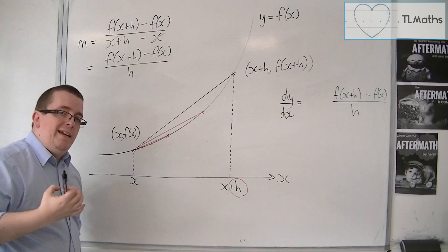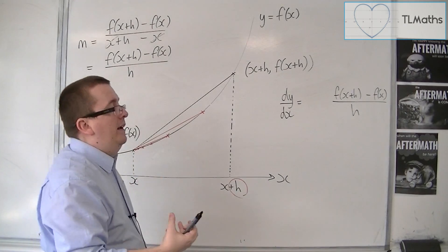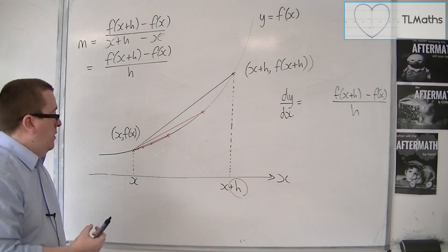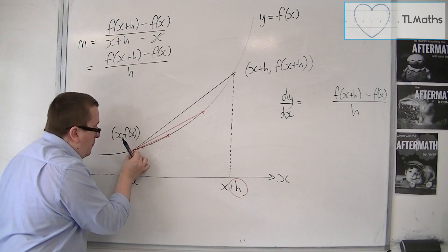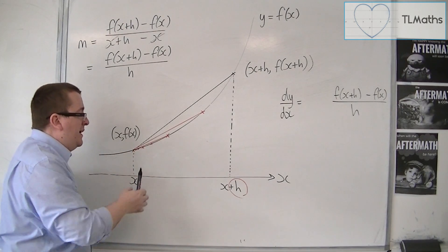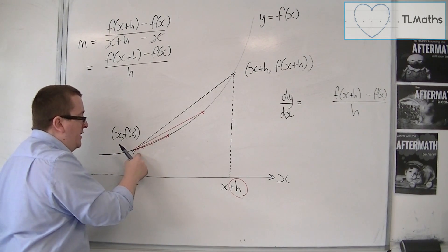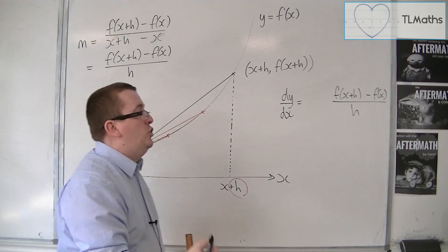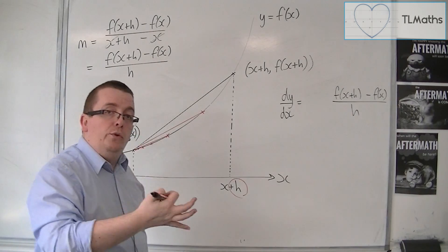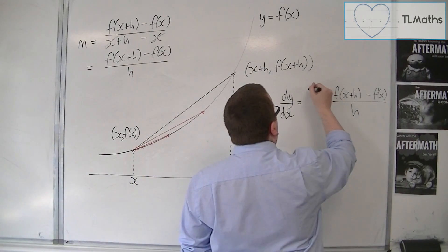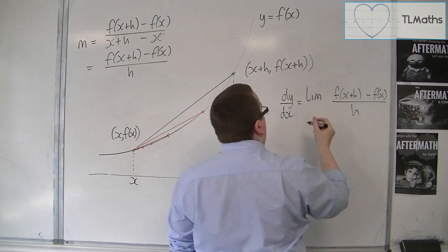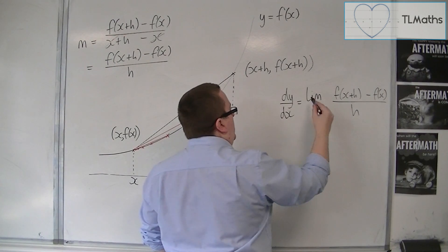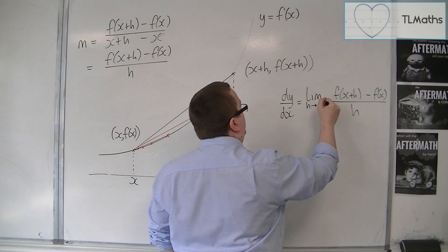But I'm shrinking h until it gets towards 0, until that gap between the two points that I'm looking at, this red point that's on the curve and that black point that's there, gets so small that h effectively goes towards 0. And the way that we write that is we write it as the limit as h tends to 0.